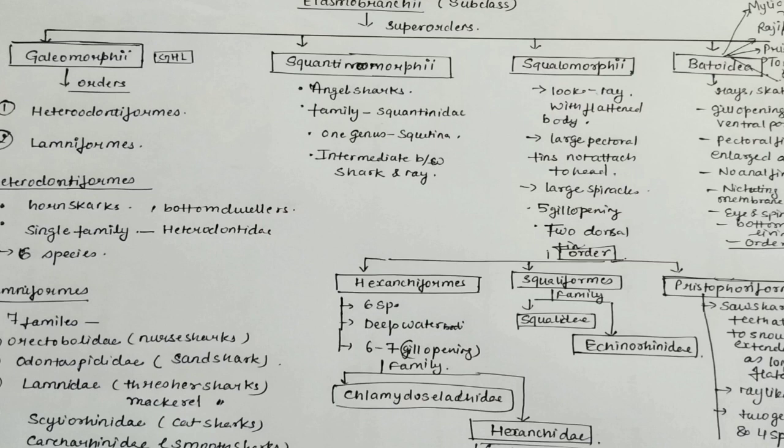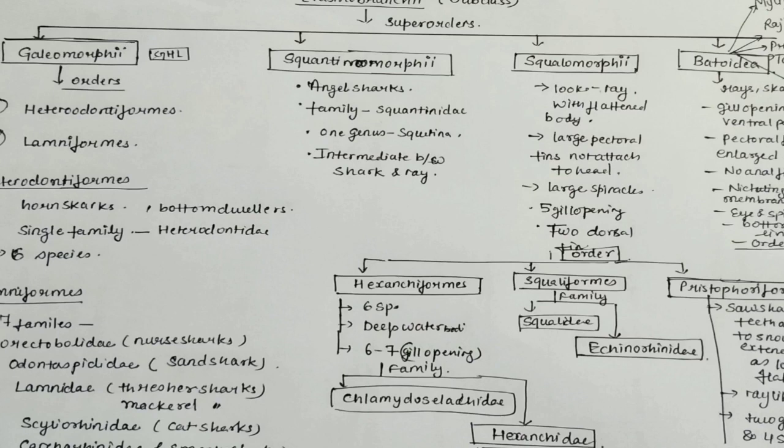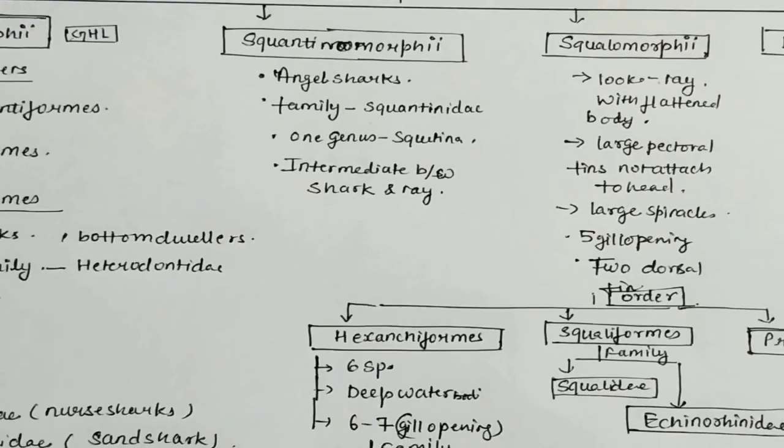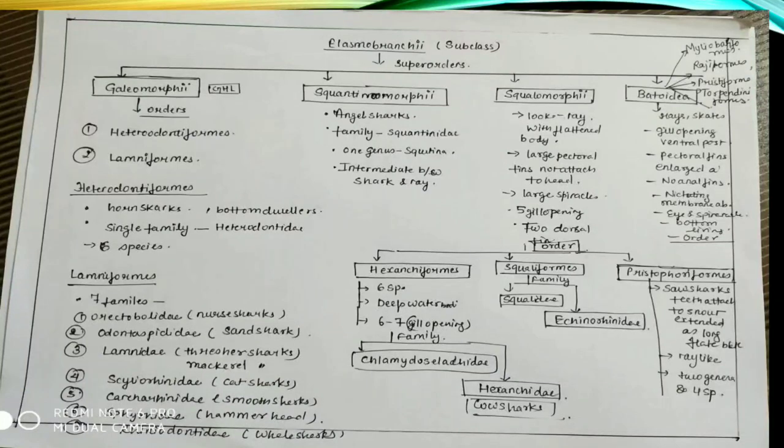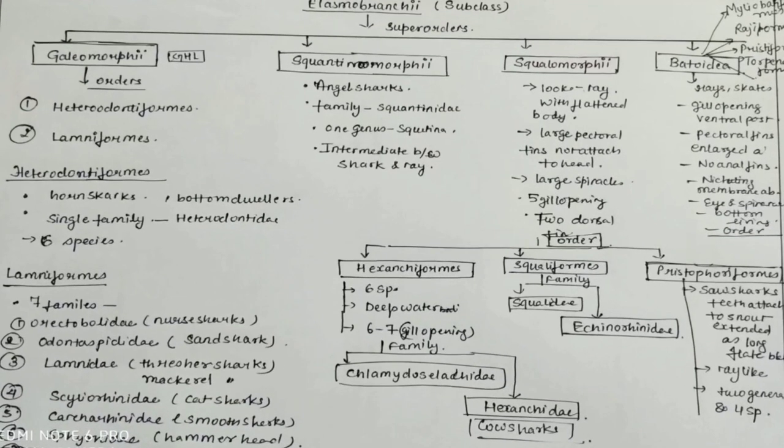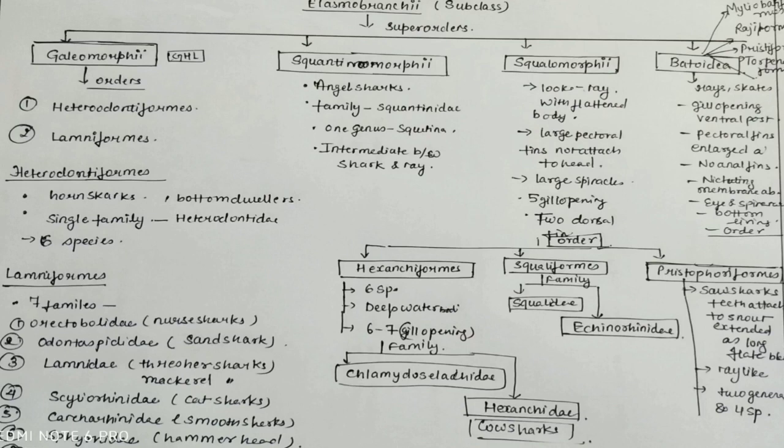For the order part, super order Squalomorphy is divided into order Hexanchiformes, Squaliformes, and Pristiophoriformes. In Hexanchiformes, there are six species, deep water, six to seven gill openings. The families are Chlamydoselachidae and Hexanchidae. Hexanchidae are also known as cow sharks.